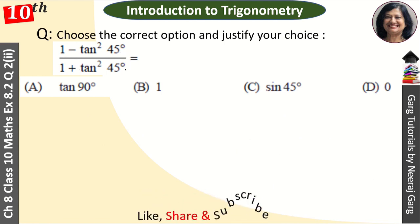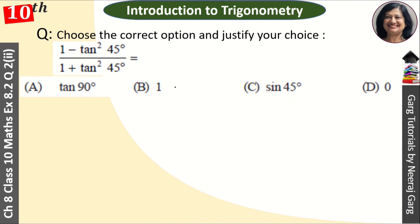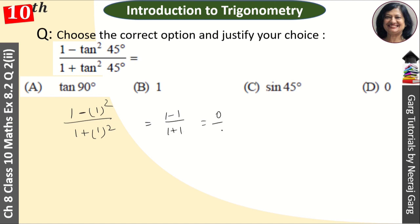Doosra MCQ: (1 - tan²45°) upon (1 + tan²45°). Options hain: sin 90°, 1, sin 45°, aur 0. Yeh simple hai — tan 45° ki value hoti hai 1. Toh numerator: 1 - 1² = 1 - 1 = 0. Denominator: 1 + 1² = 2. Toh answer aaya 0/2 = 0. Answer hai D: 0.